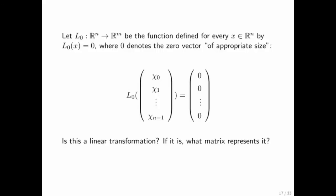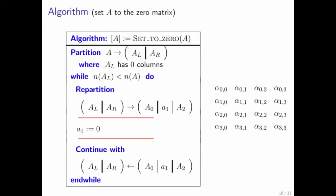Okay, so hopefully you have concluded that, indeed, it is a linear transformation and that there is a matrix that represents it. We call that matrix the zero matrix.